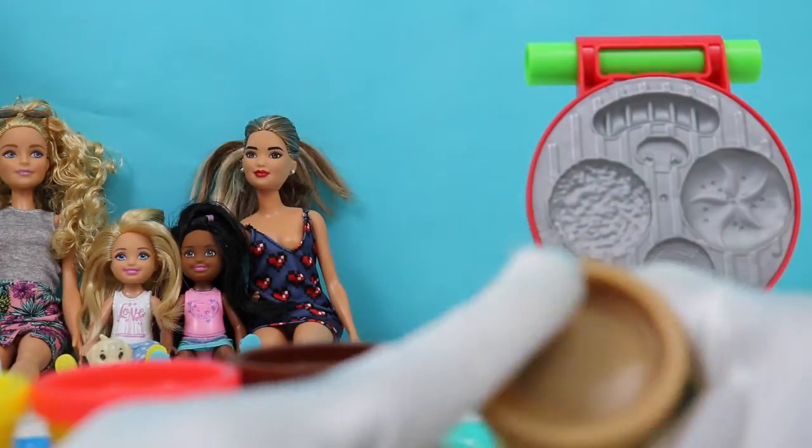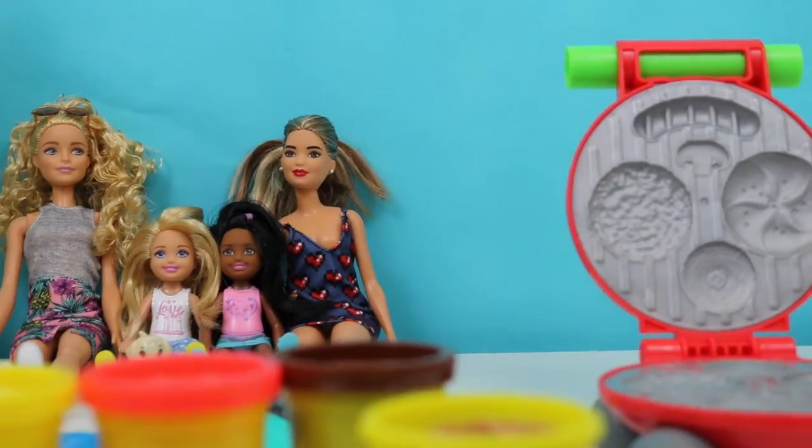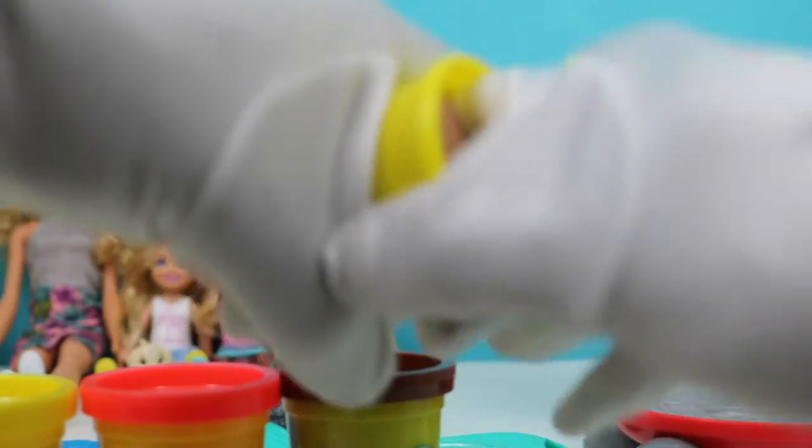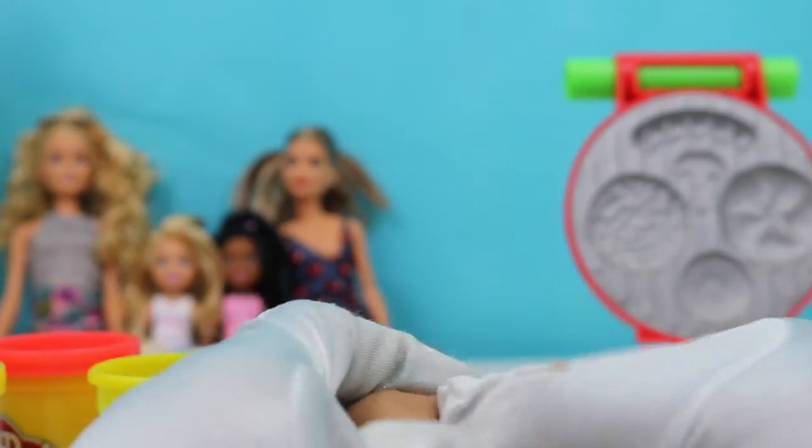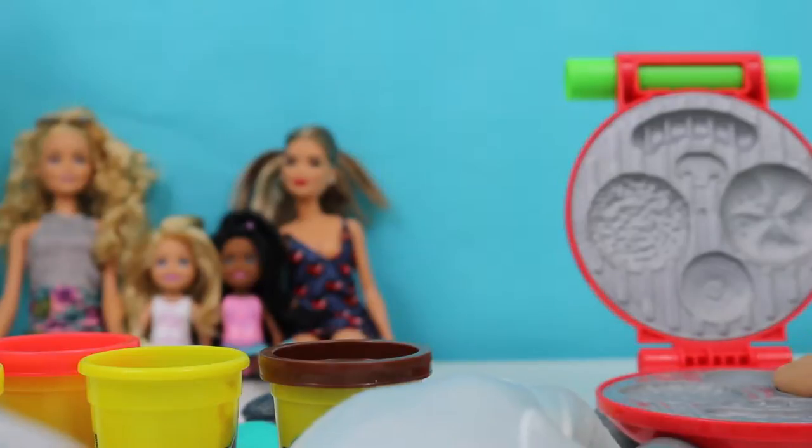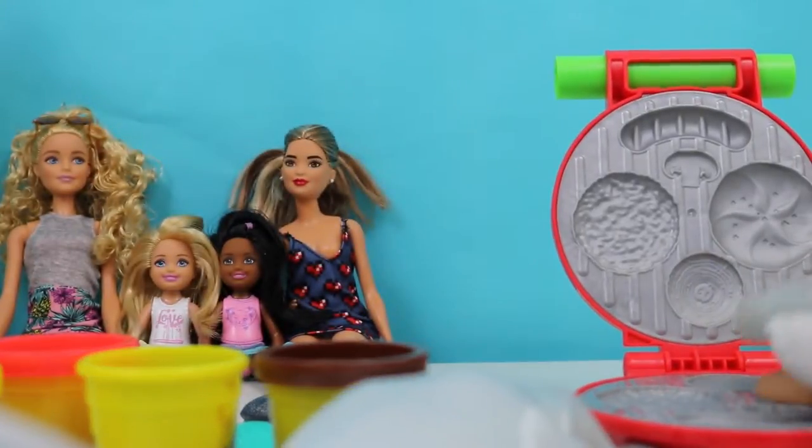All right, kids. So we're going to make a burger for Amanda. Let's take a little bit of the brown Play-Doh here. Sculpt this a little bit and make our bun first. I like to make a ball and then squish it a little bit. See if it fits in our grill. Be careful, girls. It's going to be hot.